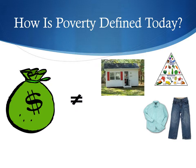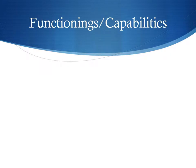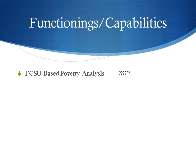We believe that it is time for America to reconsider poverty — to move away from basing our measurements solely on income and instead look at individuals' and families' ability to achieve their basic needs. For those of you familiar with the terms, our ideal method of measuring poverty is an FCSU-based capabilities analysis. For those who found that unfamiliar, don't worry — we will explain exactly what that means.